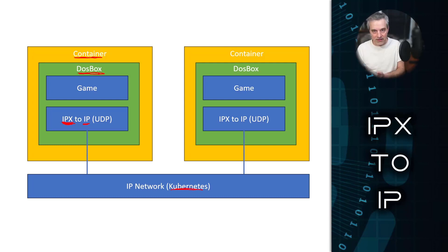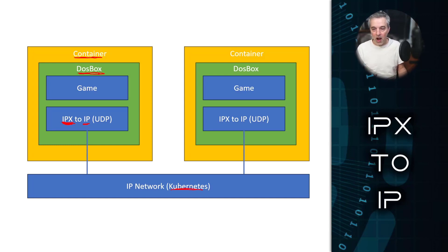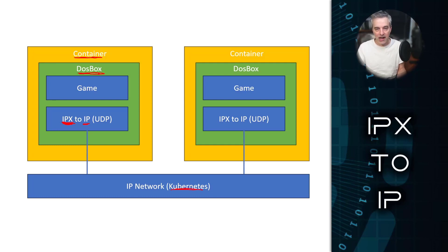In the late 90s, as the internet became a mainstay in our lives, IPX was replaced by IP for network traffic on both the local network and the internet. So all these older games that implemented IPX didn't necessarily receive an update or patch to enable IP — they kind of just fell into obsolescence. There were a few games that came out in the late 90s that were initially IPX games but then added IP support later, such as StarCraft. The original release only supported IPX networking for local network games, but later added IP support.